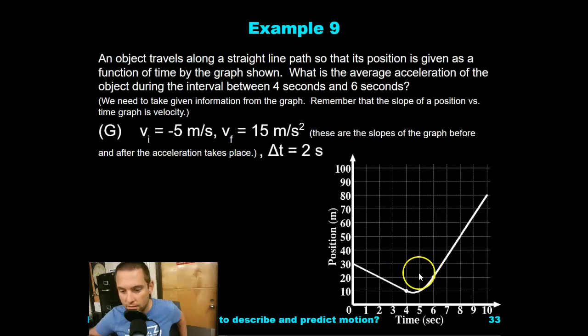So the slope of a position versus time is velocity. Initial velocity is negative 5 meters per second. The final velocity is 15 meters per second. How can we figure that out? Well, take a look. Even though there's this curve here in between these two dots, it is a straight line leading in and it is a straight line leading out. So we're just going to take the slope of this straight line and that gives us negative 5 meters per second. 30 minus 10 is 20, that's our rise. Negative 20. And then the run is from 0 to 4.